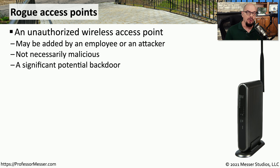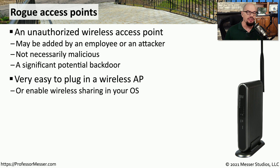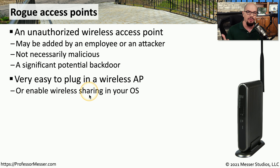Another type of rogue device is a rogue access point. This is when someone wants to gain wireless access onto your network. This could be an employee within your organization, or it may be an attacker. Someone could be installing this rogue access point for their own personal reasons and not as something that might be malicious. But either way, it is a significant potential security issue and could allow unauthorized access onto your network. One of the challenges for the security professional is that it's very easy to install or create a rogue access point. You can purchase access points relatively inexpensively and simply plug them into an existing network connection, or maybe just turn on wireless sharing inside of an operating system, and now your Windows computer becomes its own access point.